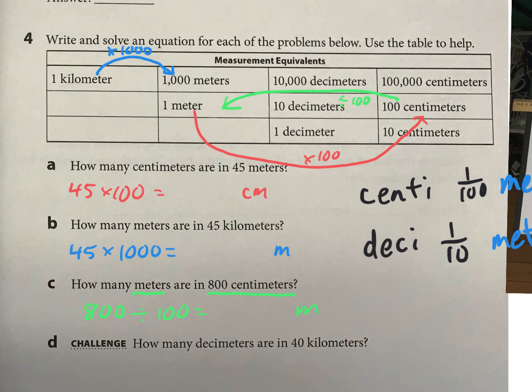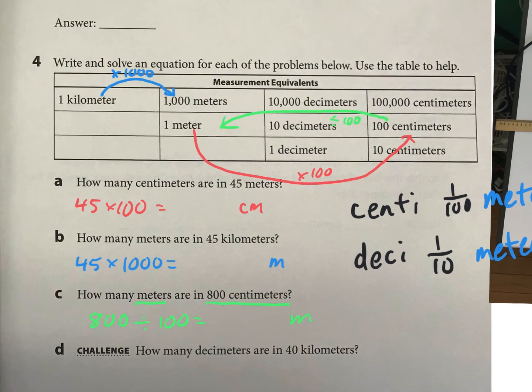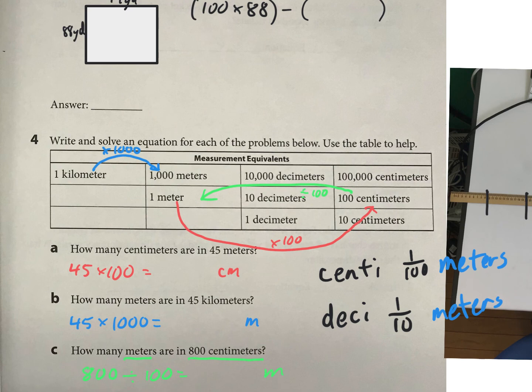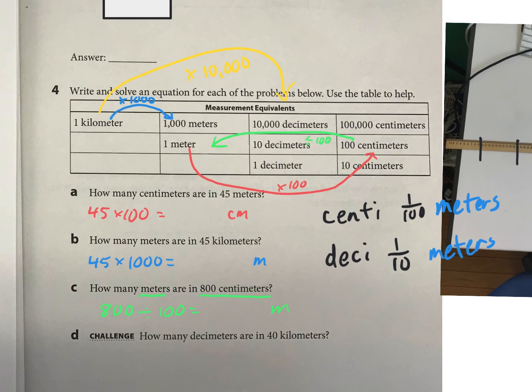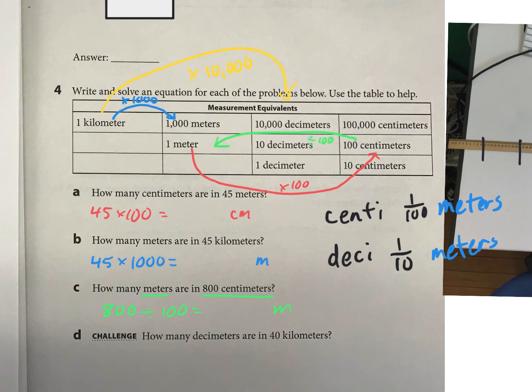And then, the final one for the challenge, we have decimeters and 40 kilometers. So, let's see. Let me get some more space. One kilometer is 10,000 decimeters. So, I think we need to do 40 times 10,000 to figure that one out.